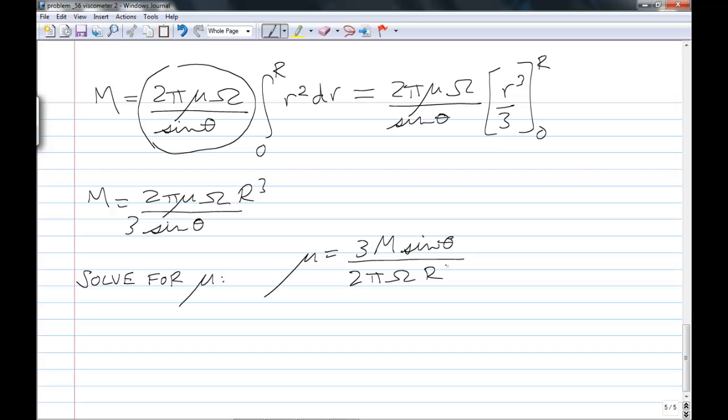And we get mu equals 3M sin theta over 2 pi omega R cubed. Now there's one final note here is that this doesn't apply for really any theta, that there's the requirement that theta be small, so that sin theta for small theta is about equal to theta. So we get mu equal to 3M theta over 2 pi omega R cubed. And that's the answer.